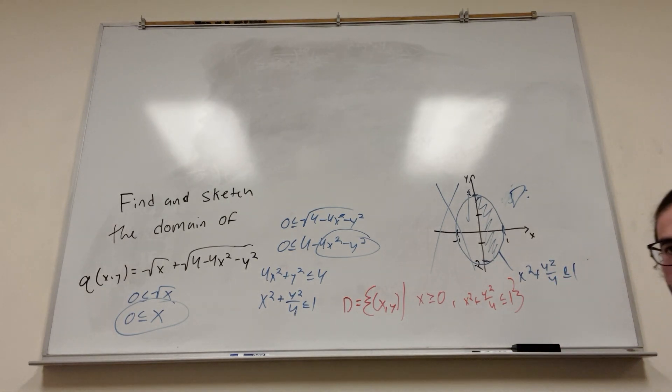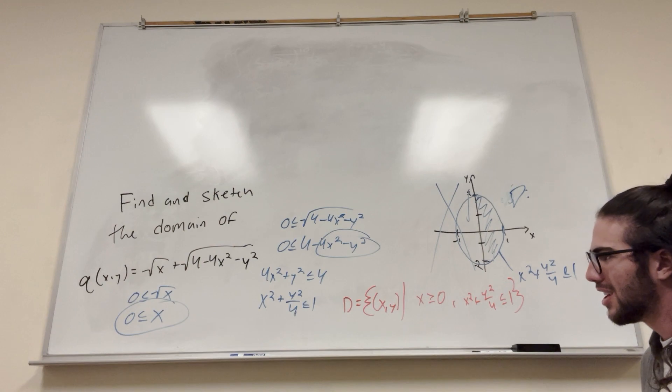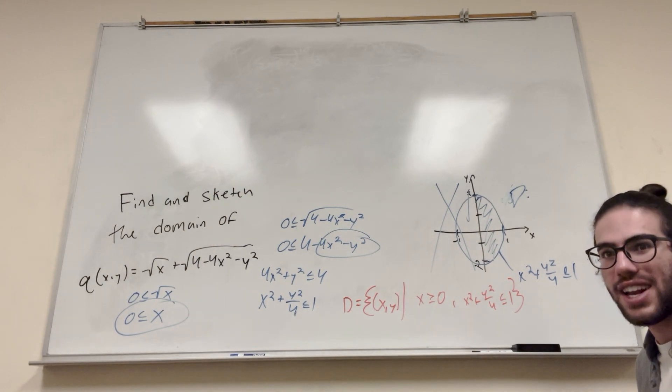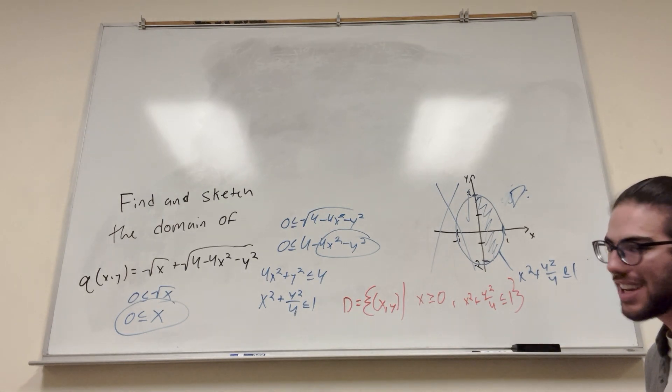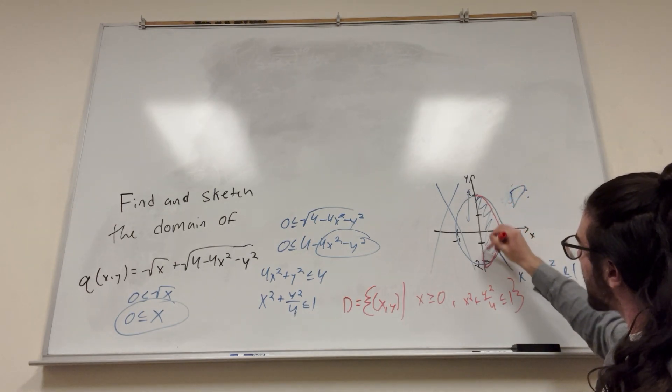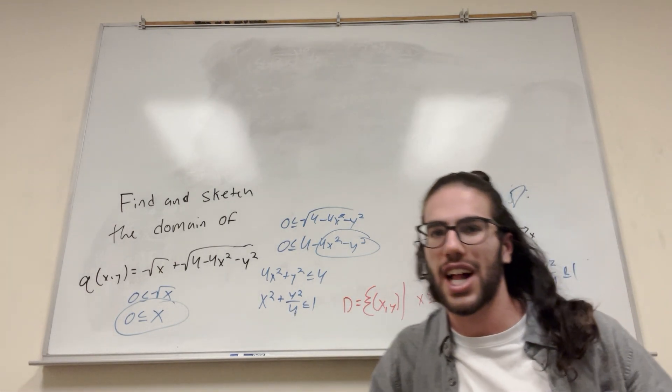So basically, to solve these kinds of problems, just find where it doesn't exist. That's how you find the domain. It's finding out where it doesn't exist. And yeah, so if you do that, stick to your guts, and you'll find perfect areas every time. Very cool. All right, good luck on your calculus, guys.